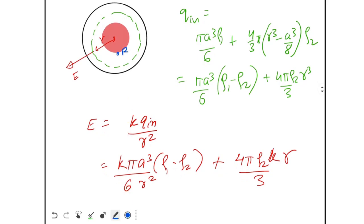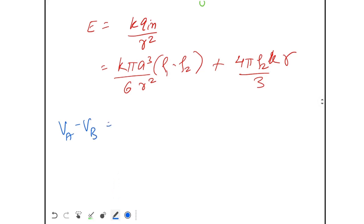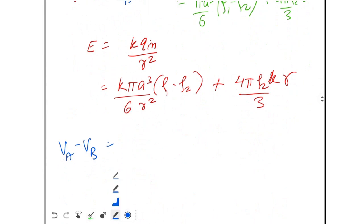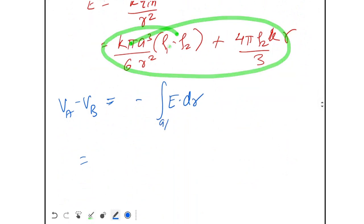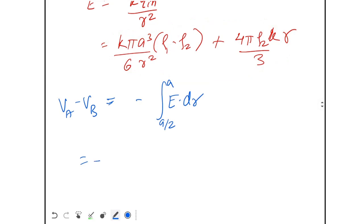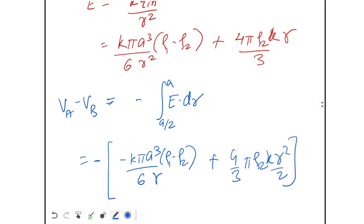We know Va at point A (r = a). To find VB at point B (r = a/2), we use VB − VA = −∫E·dr from r = a to r = a/2. Setting up the integral: minus the integral from a/2 to a of [(Kπa³/6)(ρ1 − ρ2)r⁻² + (4/3)πρ2 K r] dr.